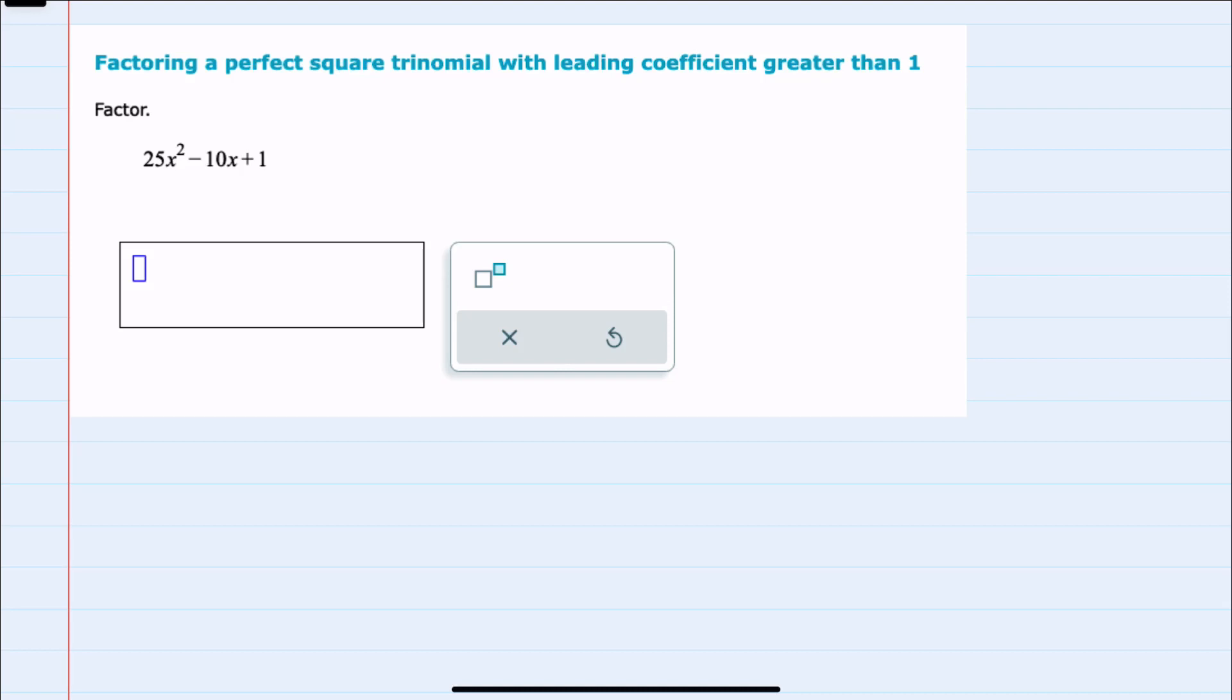In this video, I'll be helping you with the Alex problem type called factoring a perfect square trinomial with leading coefficient greater than 1, and we can factor this by a couple different approaches.